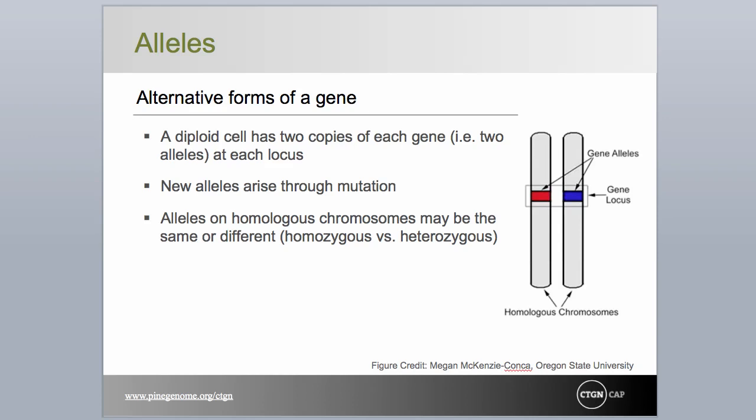Homologous chromosomes from male and female parents are seldom, if ever, identical with respect to nucleotide sequence. Mutations, which accumulate through time, occur throughout the chromosome, though it is now known that they occur more frequently in some areas called hotspots than others. Mutations in DNA that code for genes define alternative forms, or alleles, of that gene.